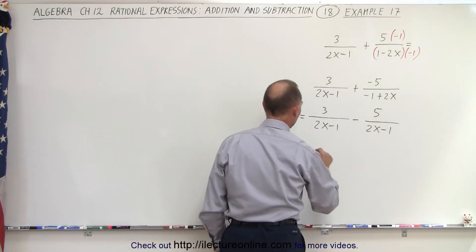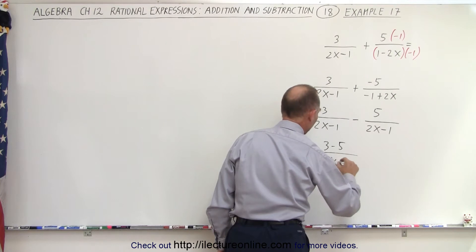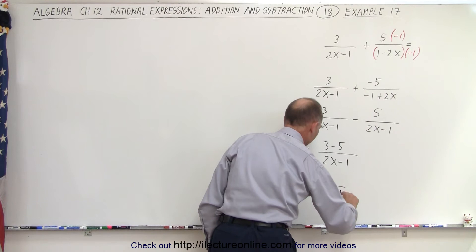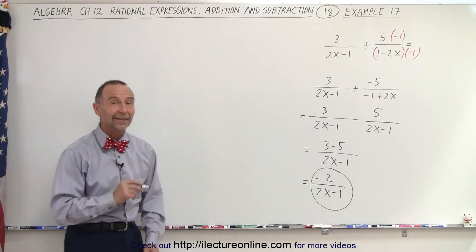So we can write them over the same common denominator of 3 minus 5 over 2x minus 1, which means minus 2 divided by 2x minus 1 is the final simplified result. And that is how it's done.